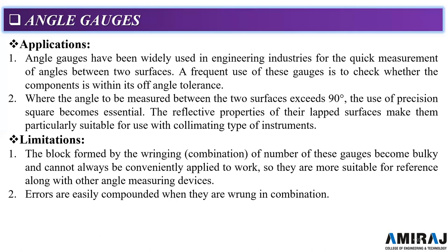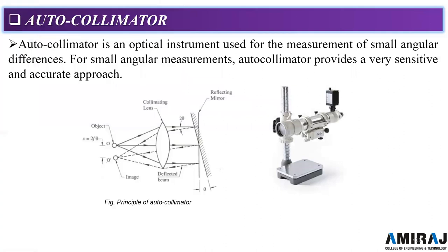So this is about the angle gauges applications and limitations. Now we will go on to the collimating devices and we will see a brief introduction today. We will see in detail in the next lecture. Briefly we will see about the principle of the autocollimator. Now what is autocollimator? Here you can see the telescopic type of instrument that is used for angle measurement.